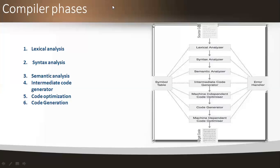Here each and every phase is connected with an arrow mark representation. We are using a preprocessing technique where the output of lexical analysis, taking a source code as input, feeds into the next phase. The output of the lexical analyzer is taken as input to the syntax analyzer, the output of syntax is taken as input to semantic, and the output of semantic is taken as input to the intermediate code generator.